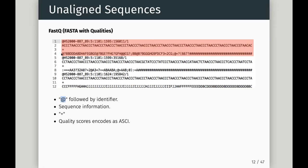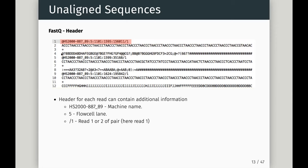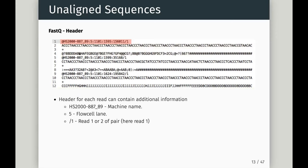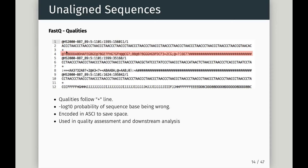FASTQ stands for FASTA with qualities. The header contains the machine name, letting us work out when it was sequenced; the flow cell (e.g., the fifth flow cell); and positions within the flow cell. Finally, '/1' or '/2' indicates which end of a paired read this is — we've sequenced either end of a fragment. This is what Connie described as paired-end sequencing.